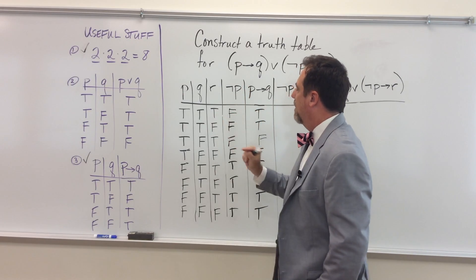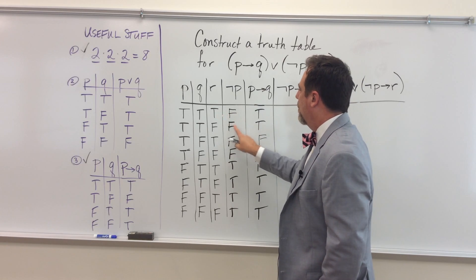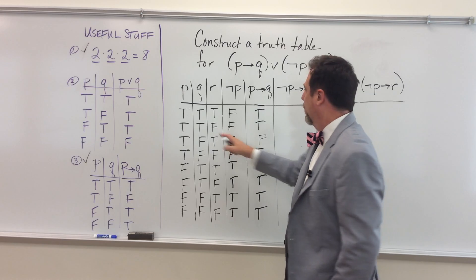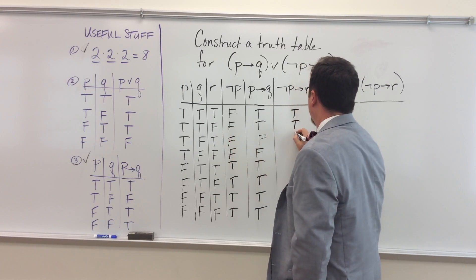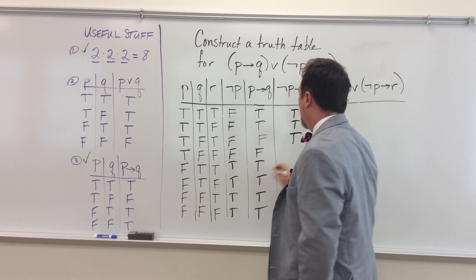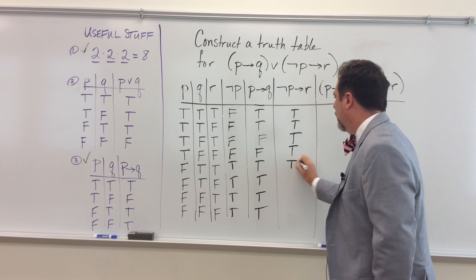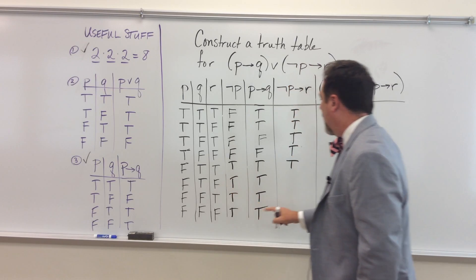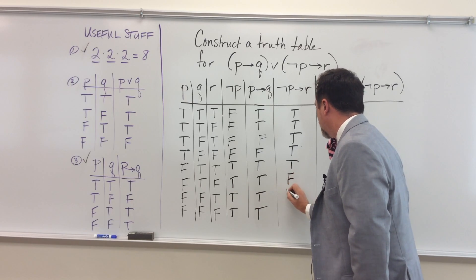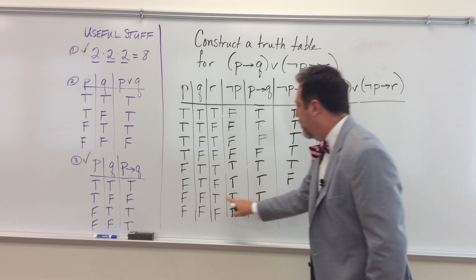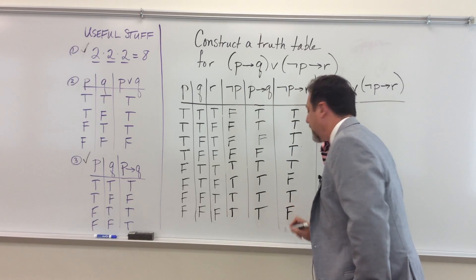So I'm going to have to read from right to left. So here I have false implies true. False implies false. Those are both true. Here I have false implies true. That's true. False implies false. That's true. True implies true is true. True implies false. Oh, that's bad, right? So that's my only, my first case of false. And then I have true implies true. That's true. True implies false. As we said, that's false.